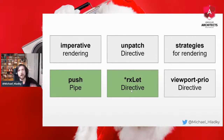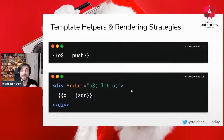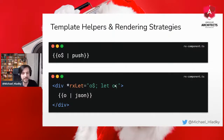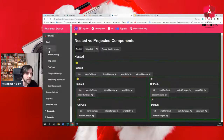Let me introduce two things: the push pipe and the rxLet directive. The push pipe is an Angular pipe that is, from a usage perspective, identical to the async pipe — you just use it as a drop-in replacement. The rxLet structural directive enables you to bind the changing values of an observable to a local variable in your template.